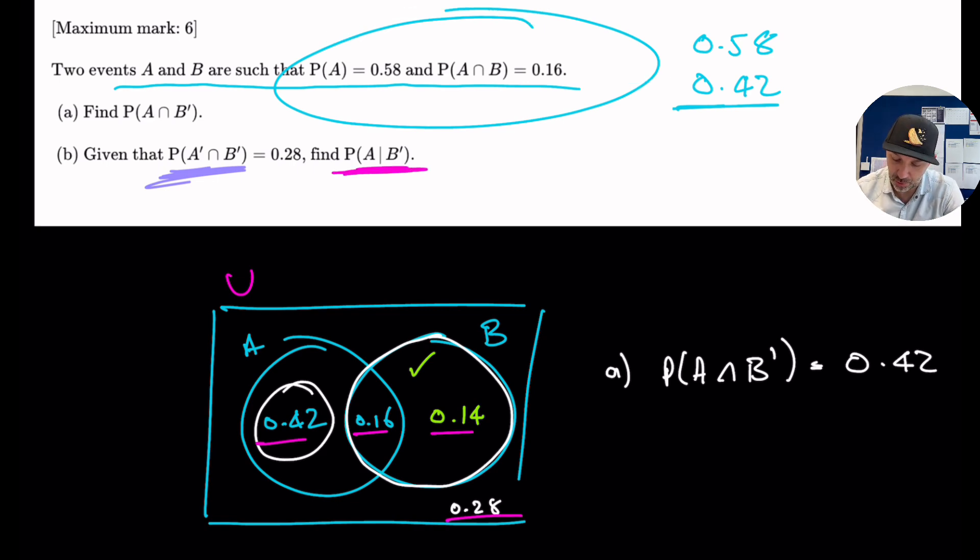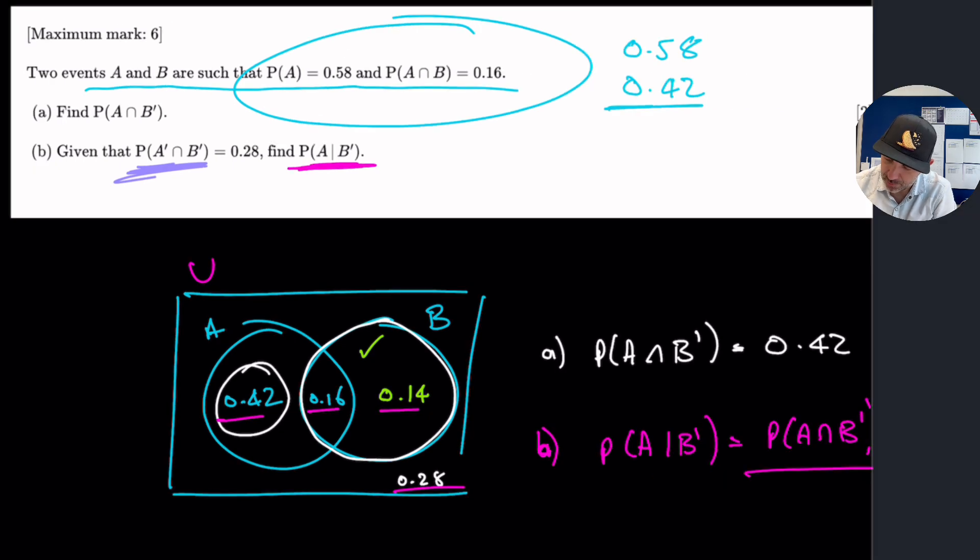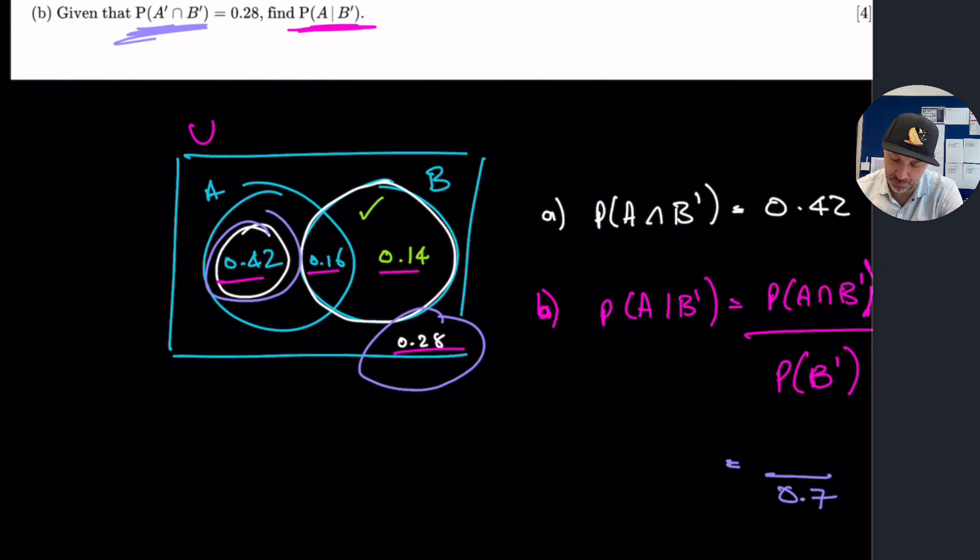Let's go back to the question here. What is the probability of A given not B? Of A given not B is the probability of A and not B over the probability of not B, right? So not B is 0.42 plus 0.2 plus 0.28. So that's 0.7. So the denominator will be 0.7. And the numerator is A and not B. A and not B. So that is 0.42.